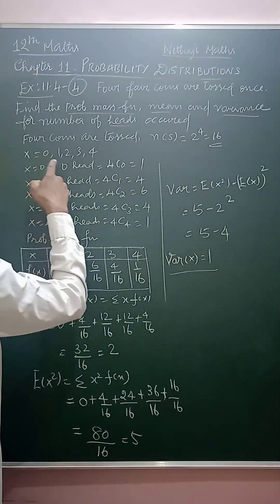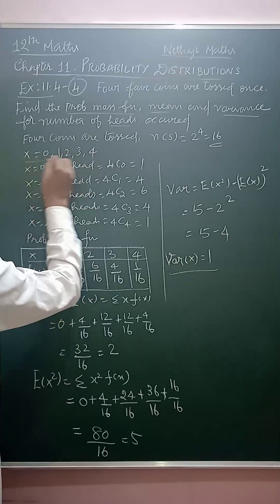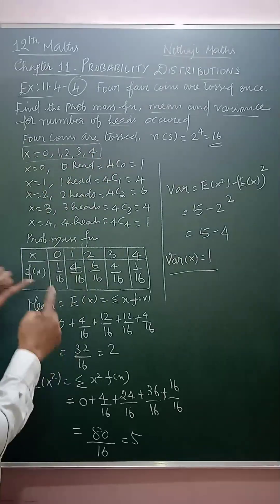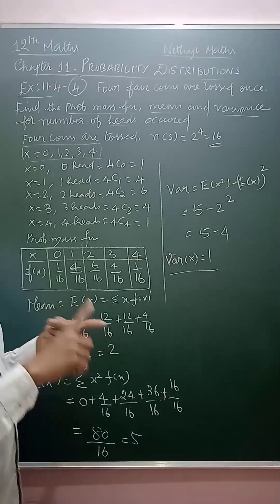When x equal to 0, 1, 2, 3, 4, these are the random variable values. 0 heads, 1 head, 2 heads, 3 or 4 heads.